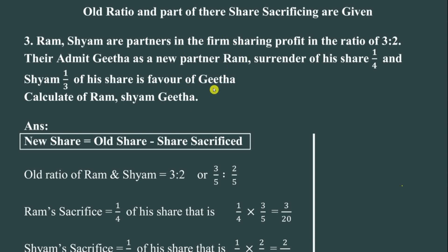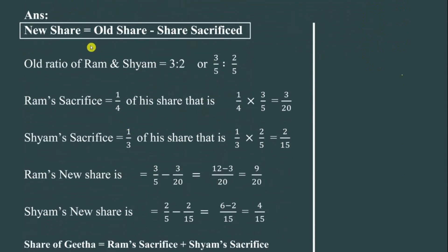If you look at this question carefully, you can't find Gita's share directly. In this kind of problem you have to use a trick. Whenever the question gives only a part of the sacrificing ratio — here Ram is sacrificing 1/4 and Sham is sacrificing more than a quarter — you need to first find the sacrifice ratio in order to find Gita's share.